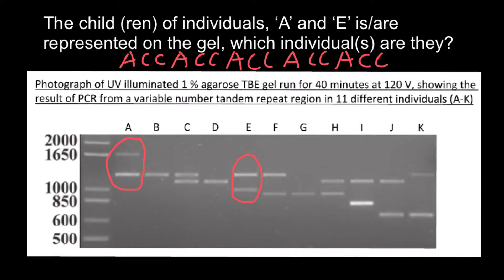Now let's take a look at our gel electrophoresis results. Could person B be a son of persons E and A? Gender isn't important here — whether this would be female or male or vice versa. As you can see, person B may inherit one allele from parent A, and also can inherit an allele of the same size from parent E. We see only one band, but this actually means this person has two alleles of the same size.